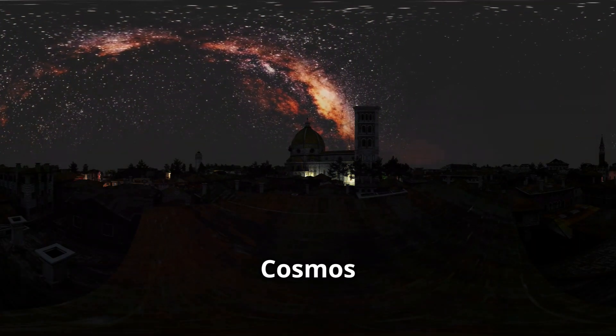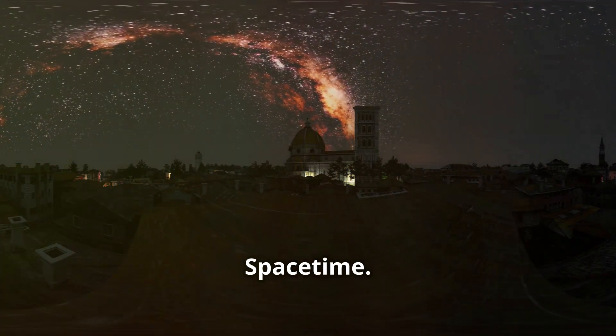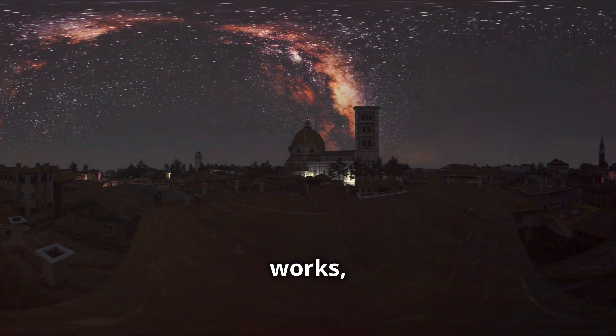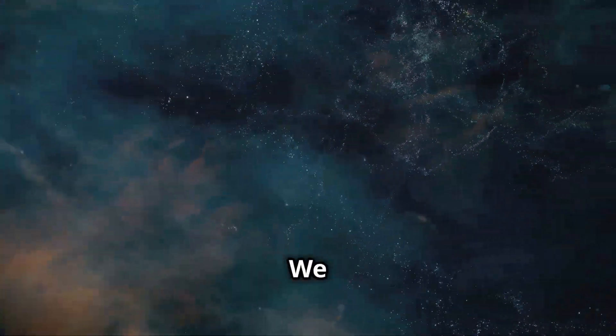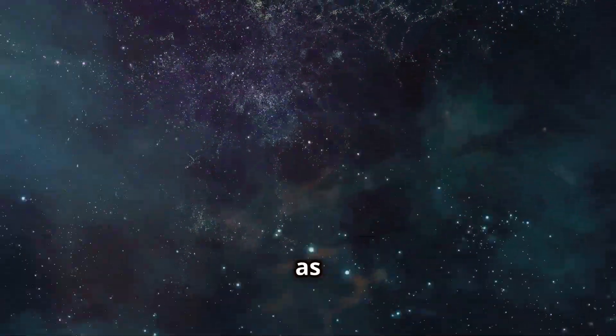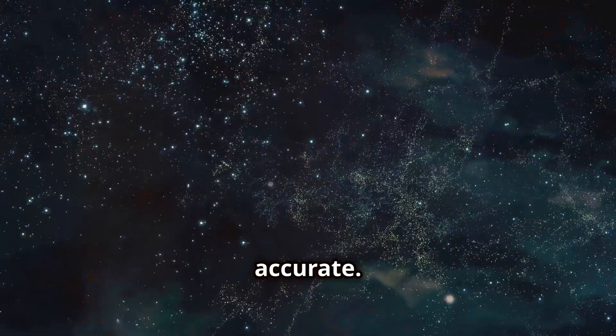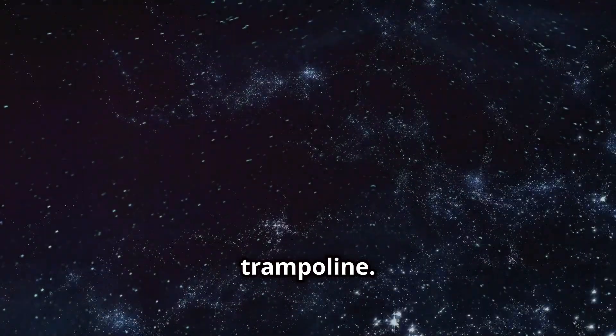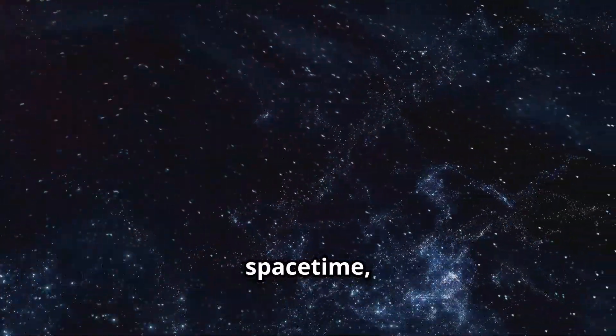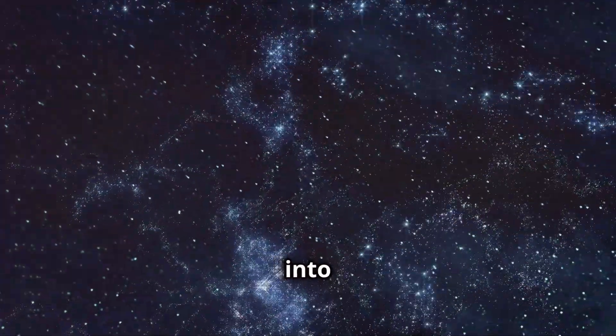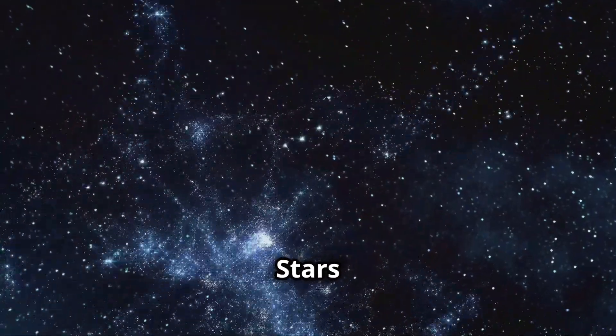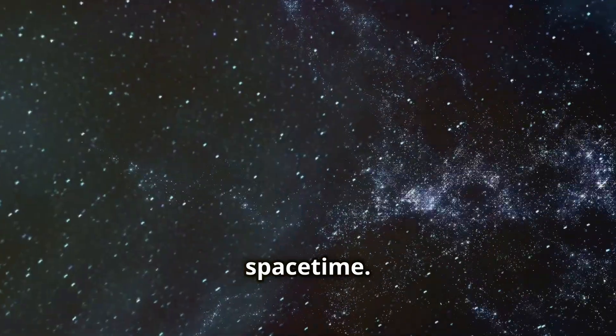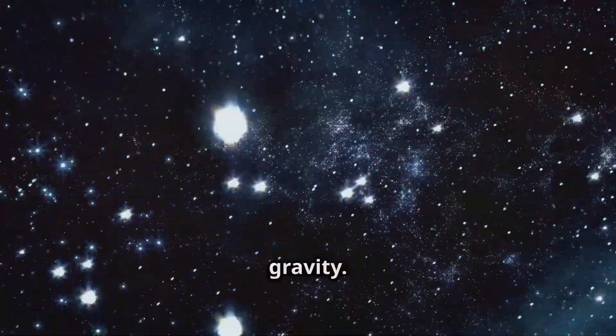The fabric of the cosmos, understanding space-time. To grasp the immensity of space and how the universe works, we need to shift our thinking. We often imagine space as an empty box, but that's not accurate. Picture instead a flexible sheet, a cosmic trampoline. This sheet is space-time, the fabric that combines space and time into one entity. Stars and galaxies bend and warp space-time. This warping is what we experience as gravity.